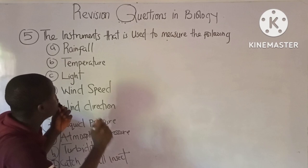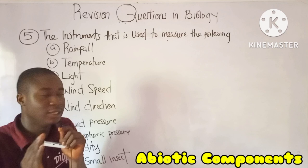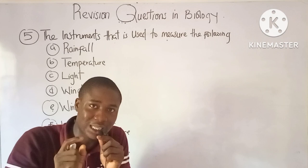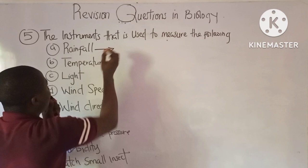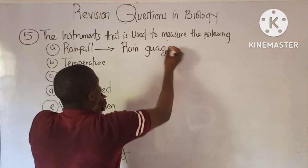Question 5 asks about the instruments used to measure various abiotic components. Abiotic components, combined with biotic components, form the ecosystem — a self-supporting or self-perpetuating system. Rainfall is measured by the rain gauge, and temperature is measured by the thermometer.